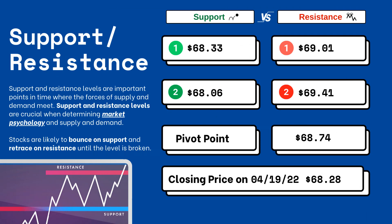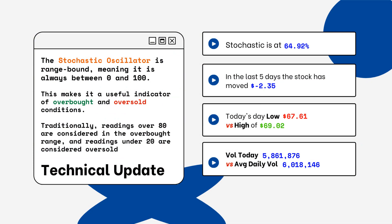Support and resistance levels are very important because they let you know where supply and demand are meeting. On the right side you'll see three support levels and also three resistance levels. These are areas that you want to watch when looking at this particular stock. Stocks typically bounce at support levels and resist at resistance levels, meaning they'll retrace from that top level.